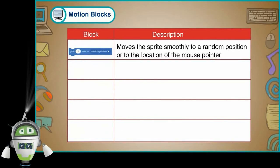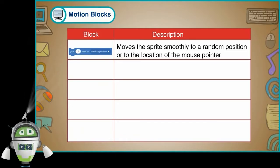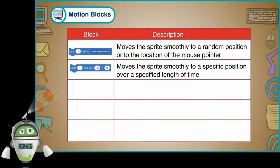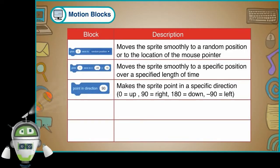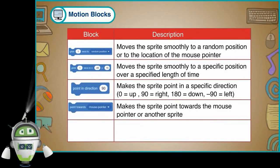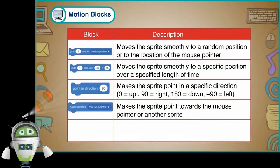Glide 1 second to random position: Moves the sprite smoothly to a random position or to the location of the mouse pointer. Glide 1 second to x, y: Moves the sprite smoothly to a specific position over a specified length of time. Point in direction 90: Makes a sprite point in a specific direction — 0 equals up, 90 equals right, 180 equals down, minus 90 equals left. Point towards mouse pointer: Makes a sprite point towards the mouse pointer or another sprite.